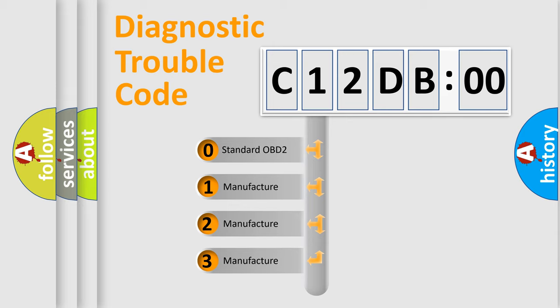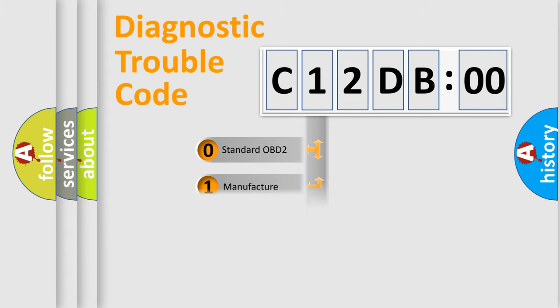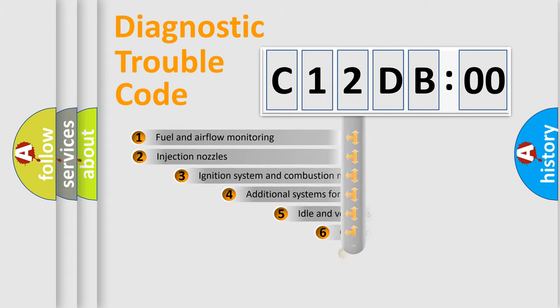If the second character is expressed as zero, it is a standardized error. In the case of numbers 1, 2, or 3, it is a more precise expression of the car-specific error.